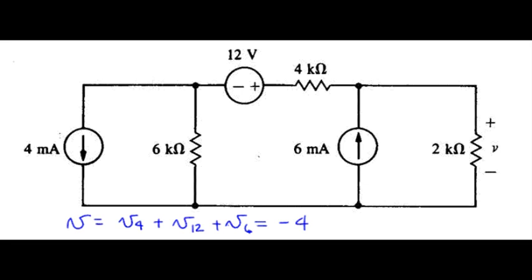V4 was minus 4, V12 was 2, and V6 was 10, leaving us with the overall voltage.